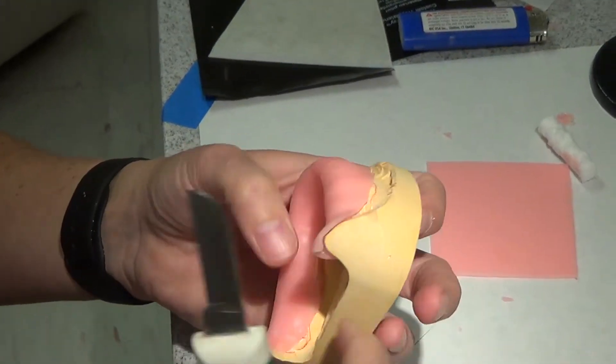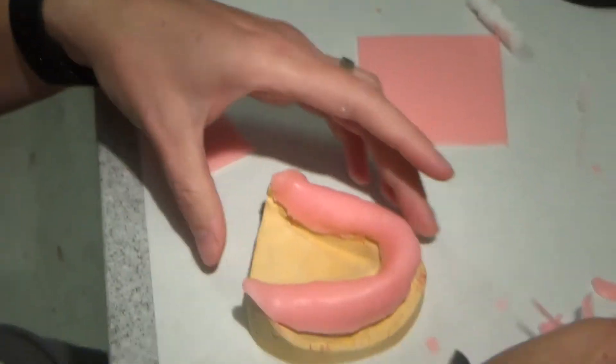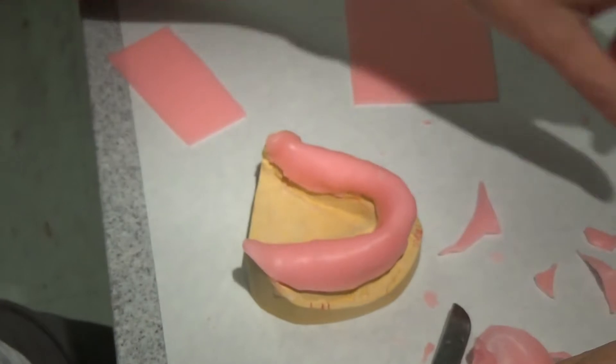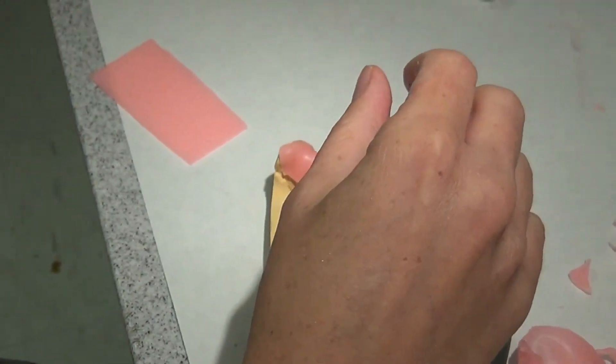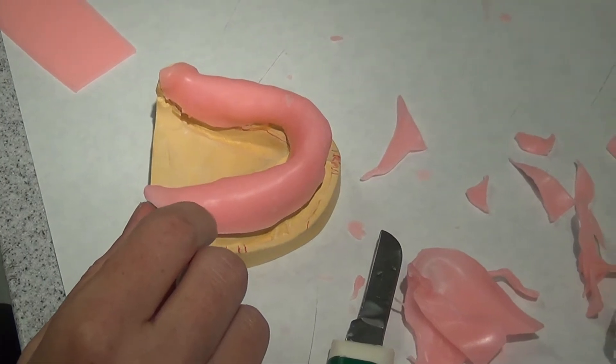Some people use sharpies so that they can really see it through the wax. I don't like to do that because I think that it makes the tray look disgusting to be honest. The black marks get in it and the patients look at the tray like, what are you about to put in my mouth?